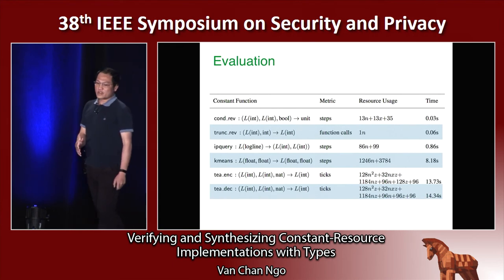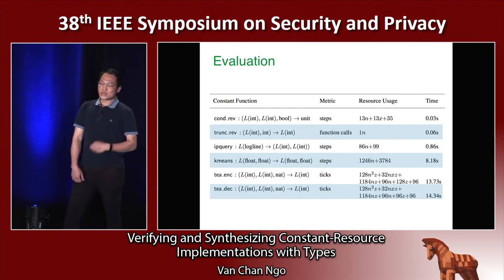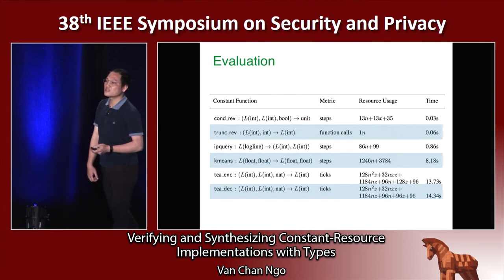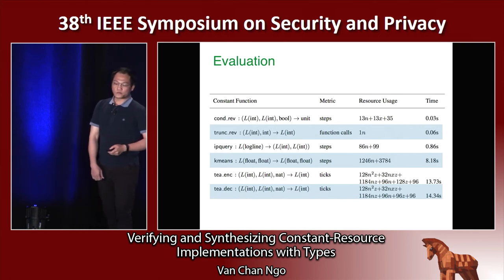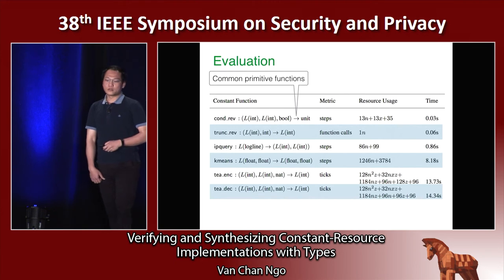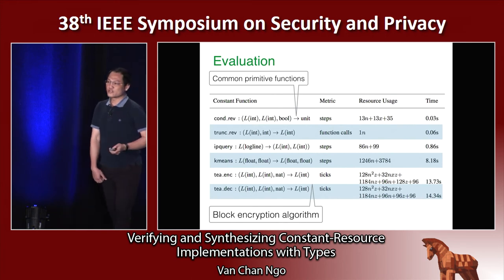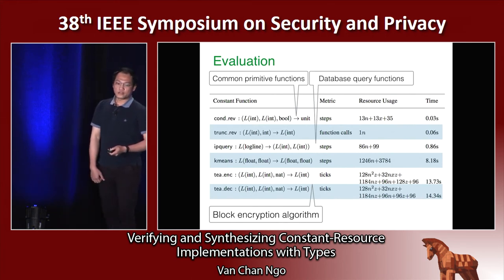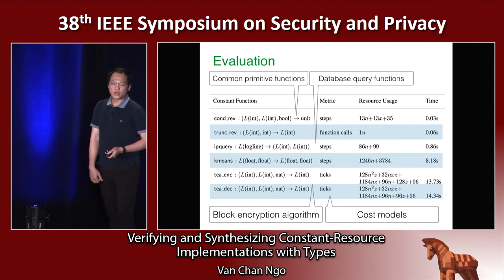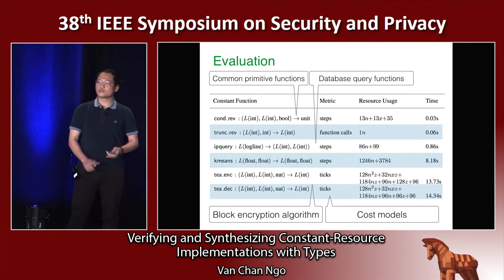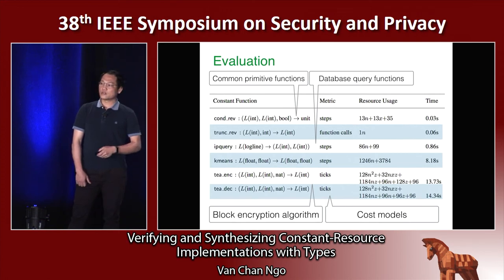About evaluation: we have implemented a working prototype that can reason about programs with resource consumption in linear and polynomial complexity. We evaluated the tool with common primitive functions, functions related to cryptography, and functions related to database query. The cost model is specified by different cost metrics — for example, the number of evaluation steps, the number of function calls, or user-defined cost metrics.